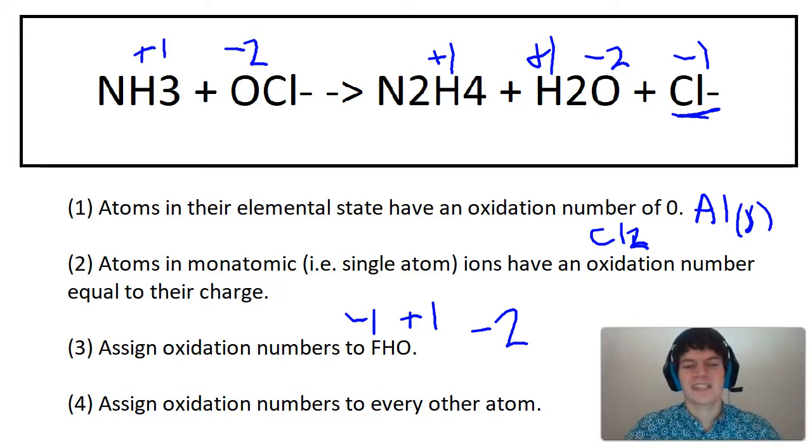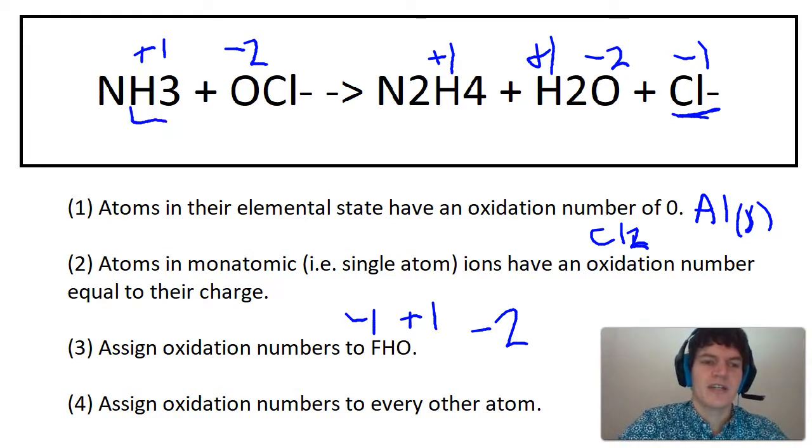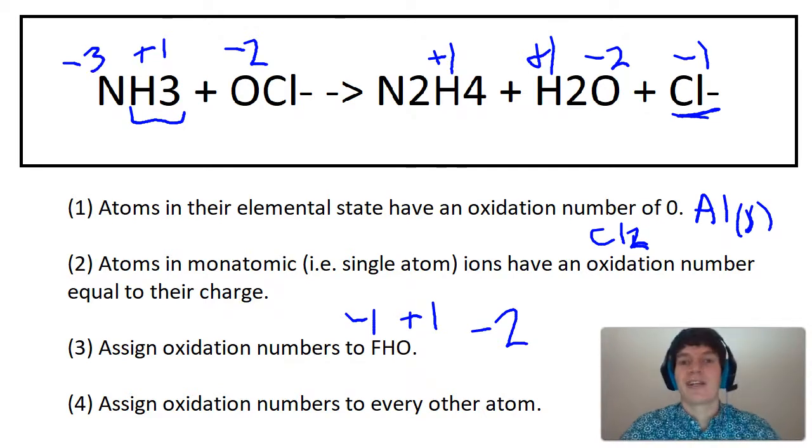And now step four, assign oxidation numbers to every other atom. So we still need to assign nitrogen a number, and you notice we have three hydrogens, so that gives this H3 an overall charge of plus three. To balance it out, we're going to give nitrogen a charge or an oxidation number of minus three.